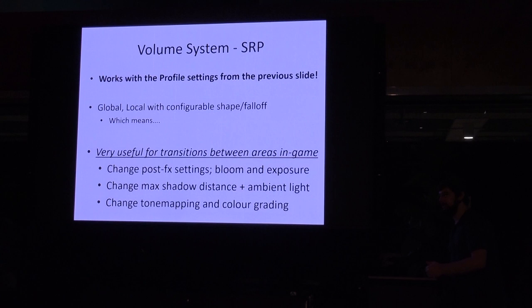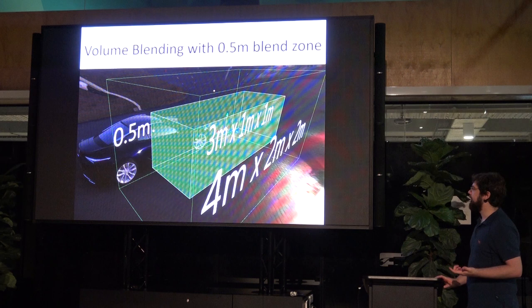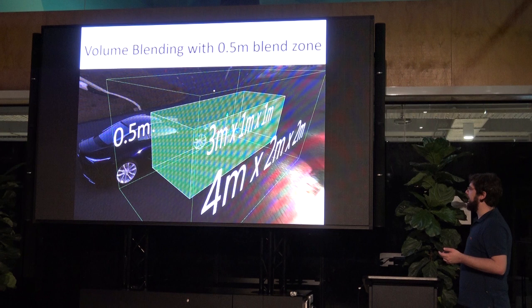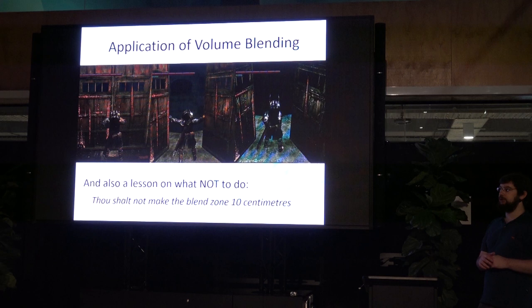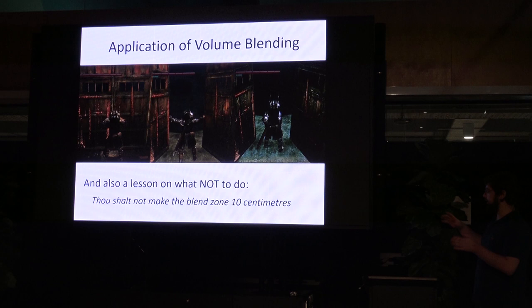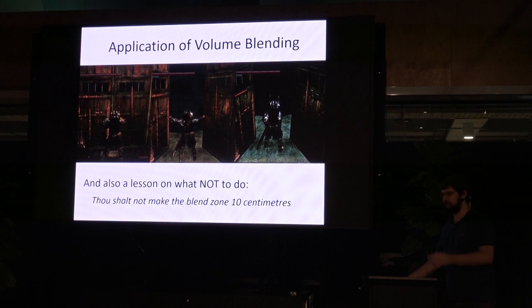This replaces something asset store people have provided for decades — now you can set things per area, per level. You can change bloom, color grading, tone mapping. If you go from small caves to a large open area, you can change shadow distance. Make sure your blend zones are smooth. If you have only 10 centimeters between vastly different settings — tone mapping, white balance, color correction — players will notice: walk here, everything goes dark gray and fog appears; walk back and suddenly you can see two miles again. It takes 10 seconds to get right, and people will notice if you don't.